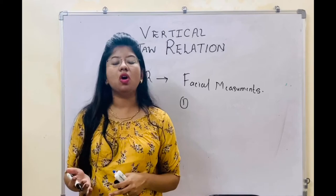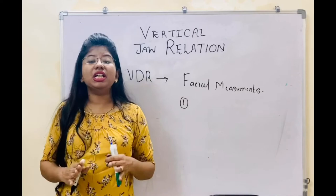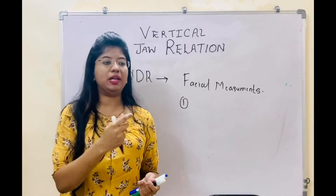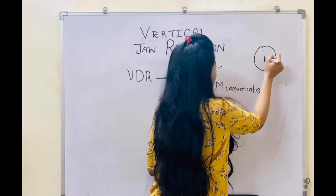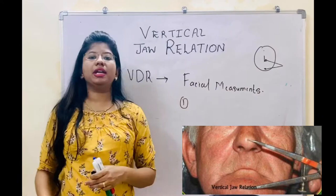In the swallowing method, we ask the patient to relax, swallow, or perform movements like licking the lip. In that condition, the jaw automatically goes to a state of rest. Whenever the patient is performing these movements, you take an adhesive tape in the form of a triangle and apply it at the tip of the nose as well as the tip of the chin. When the patient is performing all these movements, you just measure this distance. That helps in recording the facial measurement.